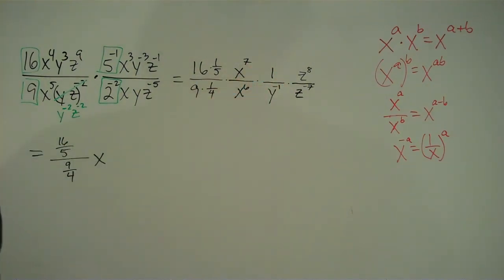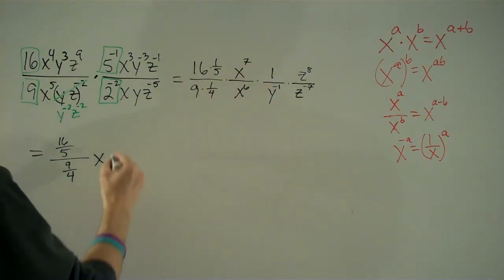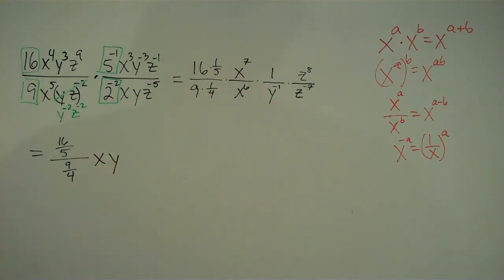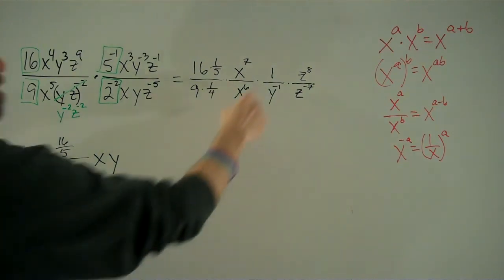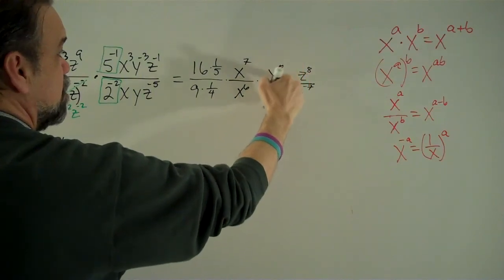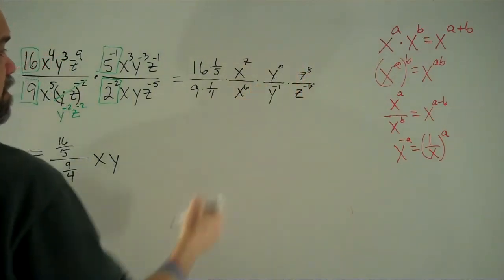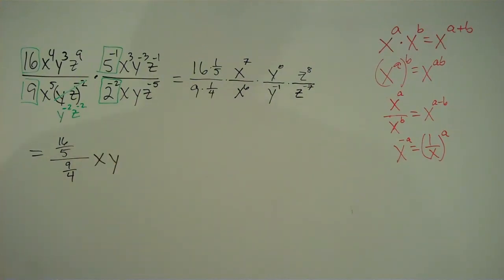1 over y to the negative 1. Well, let's think about this. 1 over y to the negative 1 is like saying 1 over y to the negative 1 power. So that means we're going to take the reciprocal of 1 over y, which is just y. That's one way to think about it. Another way to think about it is, let's call this 1 y to the 0. So we've got y to the 0 divided by y to the negative 1. 0 minus negative 1 is 1, so we have y to the 1 power.